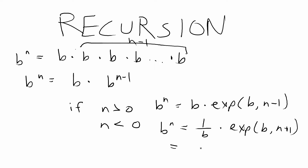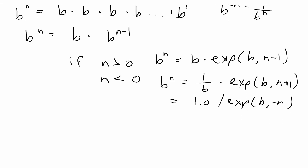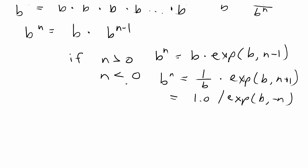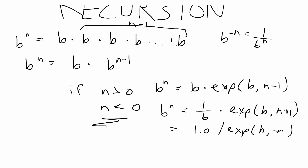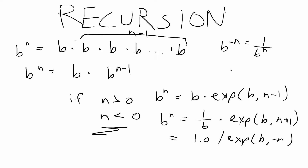Another way to handle negative exponents is to use the identity that b to the negative n equals 1 over b to the n. So you can return 1 over exp(b, −n). This works because n is negative, so −n is positive, which activates the n > 0 recursive case, and you eventually reach the base case of 0, ensuring termination.